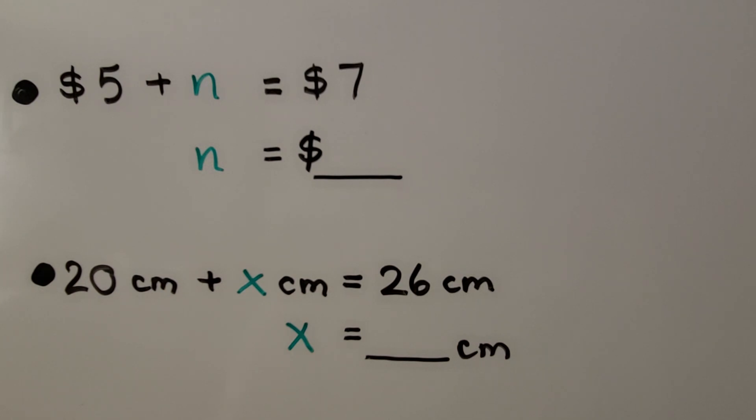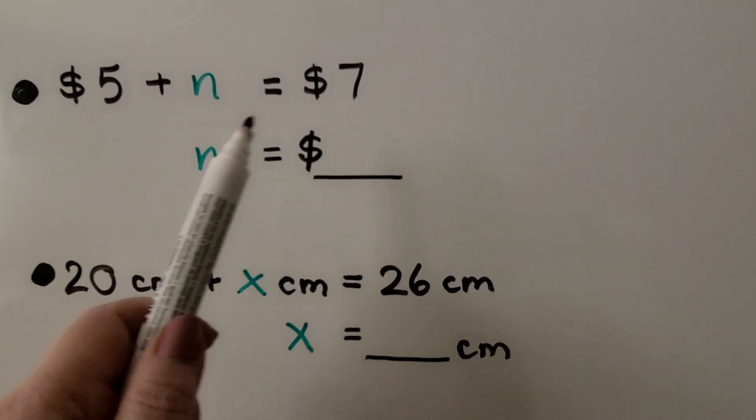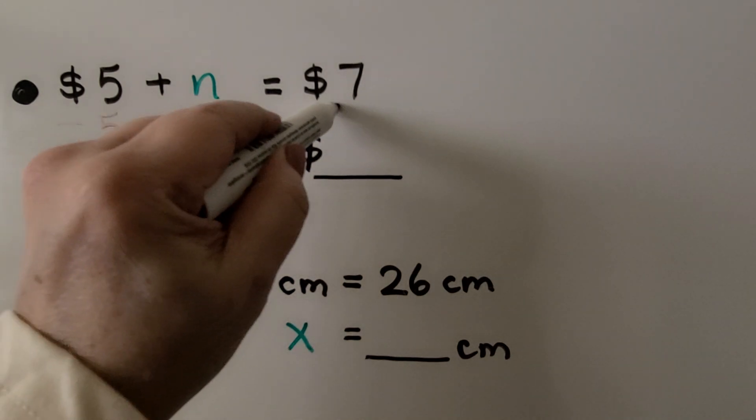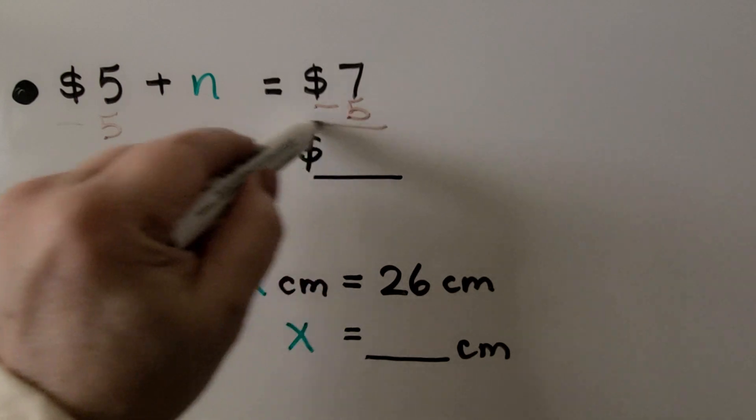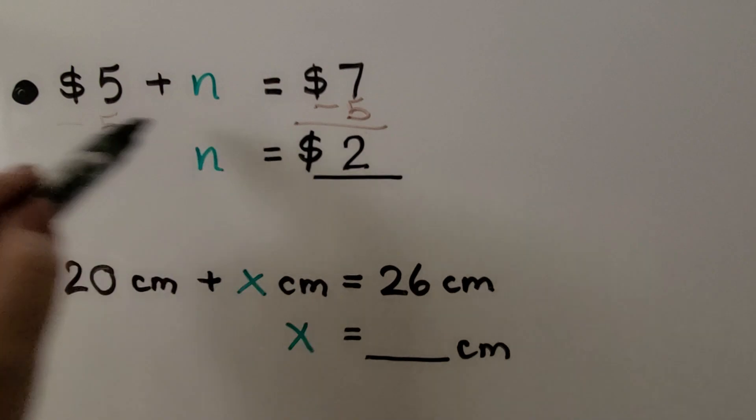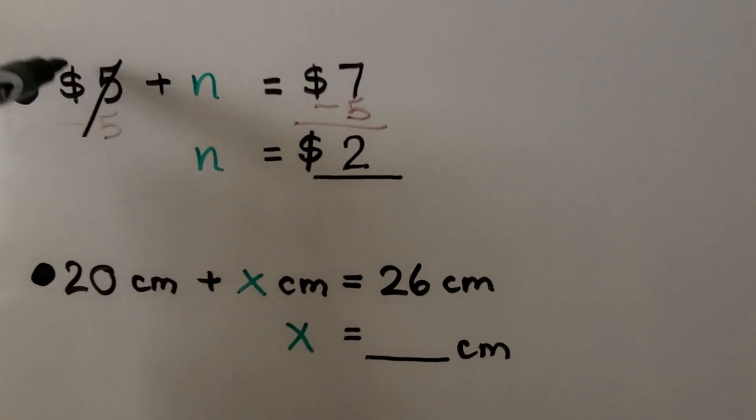And we can do this with money. We have $5 plus n is equal to $7. We can take away the $5 from this side. We can take away $5 from this side. And we see that n must be equal to 2. When we took this $5 away, we eliminated it. We removed it. We have n is equal to $2.